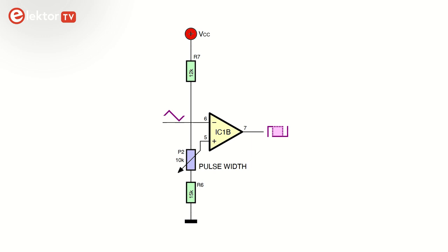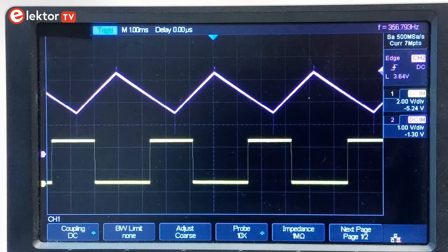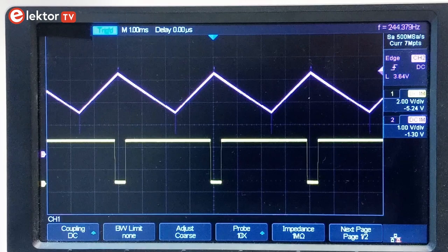IC1B acts as a comparator, with its switching threshold set by P2, R6 and R7. It compares the triangle wave to a fixed voltage. Whenever the triangle wave is lower than the threshold, the output of IC1B is high, and when the triangle wave is higher than the threshold, the output is low. This way we obtain a rectangle signal with adjustable duty cycle.